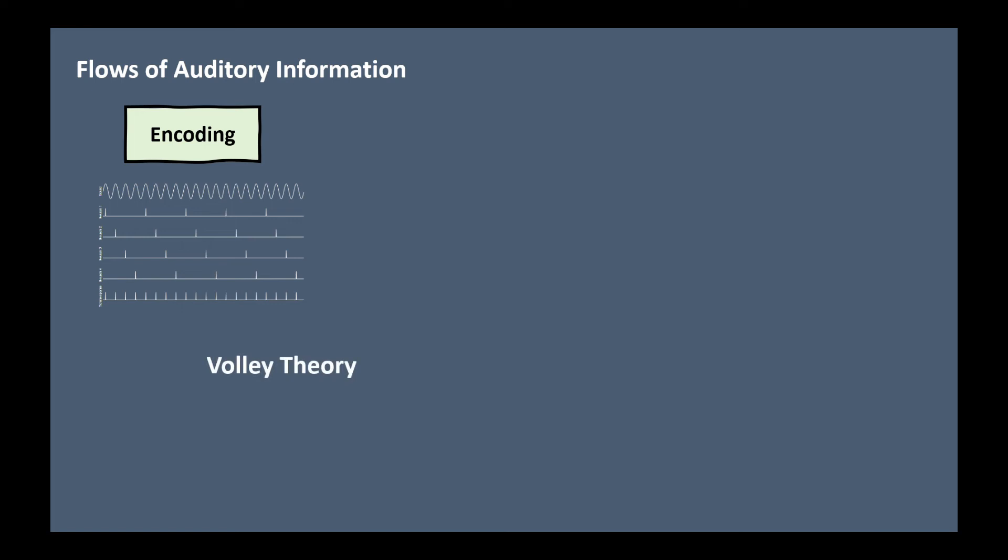Moreover, according to Volley theory, the neurons group of the auditory system respond to sound by firing action potentials slightly out of phase with one another. When combined, a greater frequency of the sound can be encoded and sent to the brain to be analyzed. Therefore, the central nervous system can gain information about stimulus frequency in two ways.